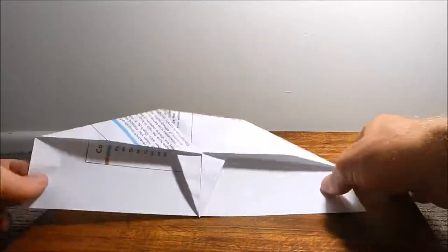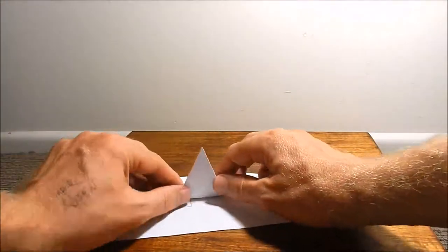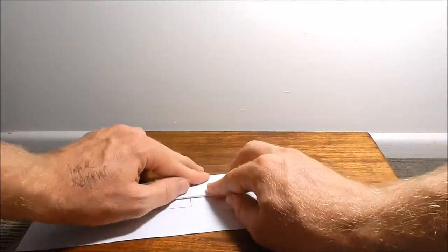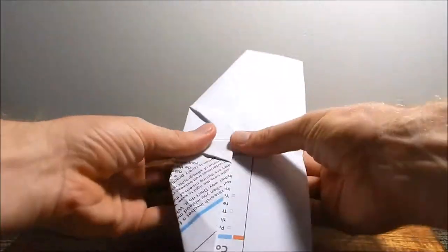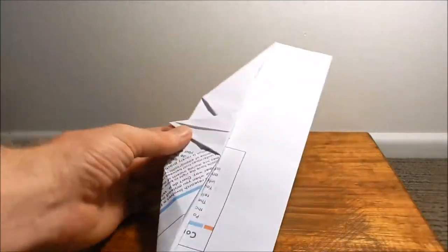Now we should have a little triangle that we can fold up, and it should go past the top of the plane. See how it goes past the top of the plane a little bit?